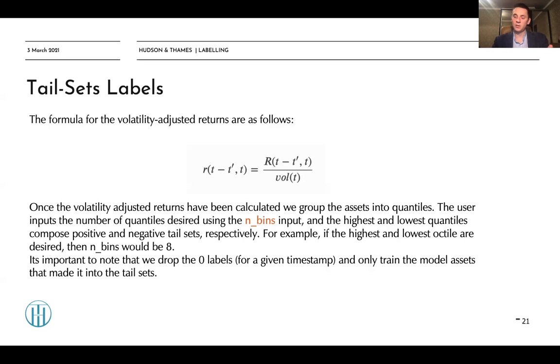So if your n-bits value equals 10, in this case you will have 0, 10, 20, and 100 quantiles. It's important to know that we drop zero labels for a given timestamp. So the rest of the securities are dropped and only train the model assets that made it into the tail sets.